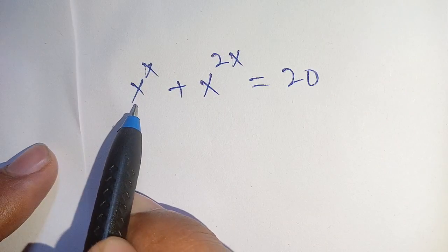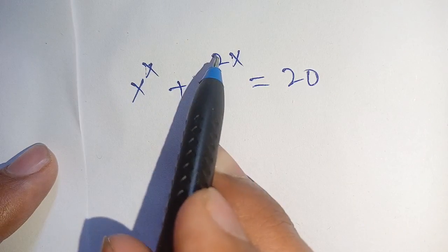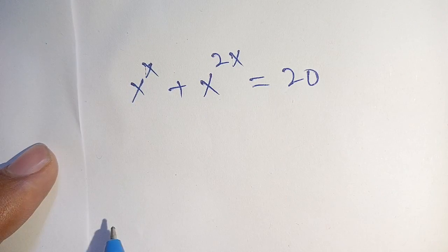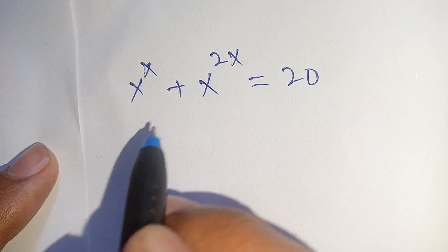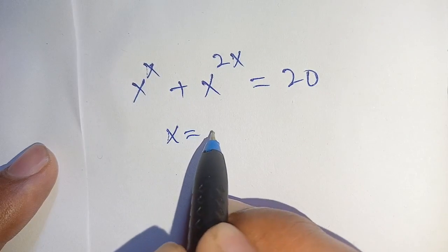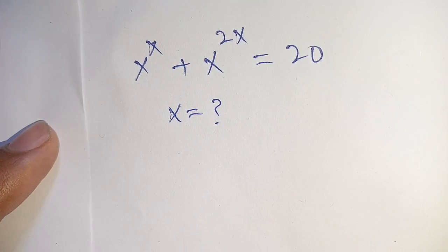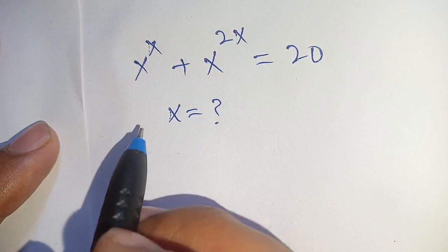Hello everyone. How to simplify x power x plus x power 2x is equal to 20, and we have to find the value of x which satisfies this equation. Let us solve this.